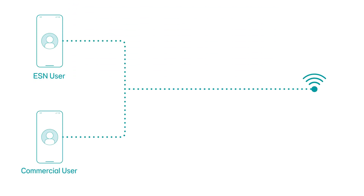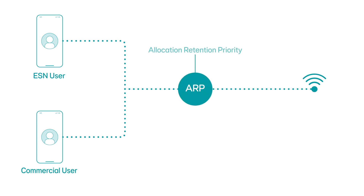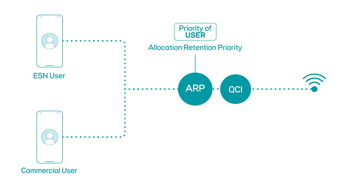Each cell works out the priority for emergency services using two factors: ARP – Allocation Retention Priority, which identifies the priority of the user, and QCI – the Quality Class Indicator, which identifies the priority of the data.